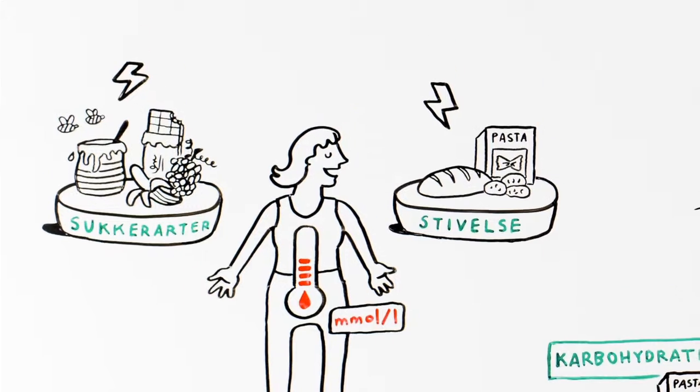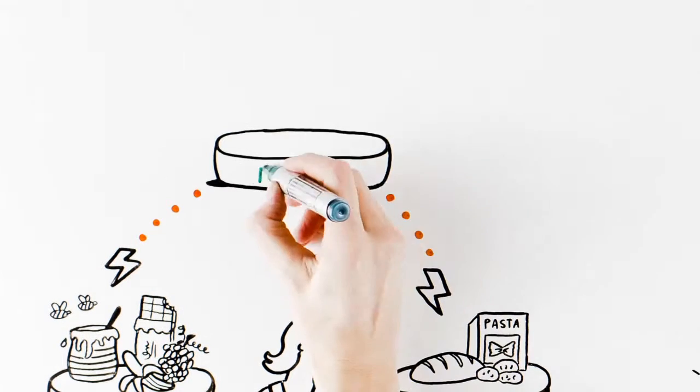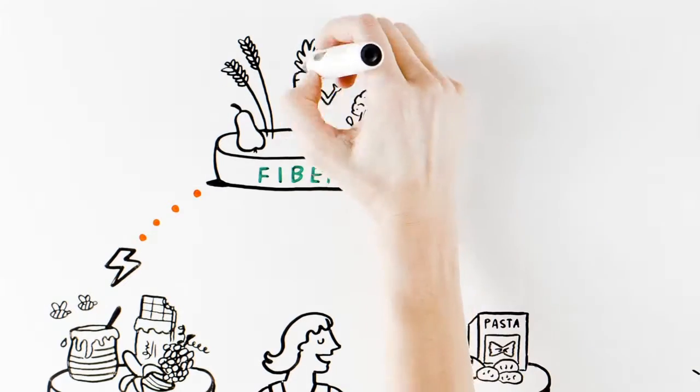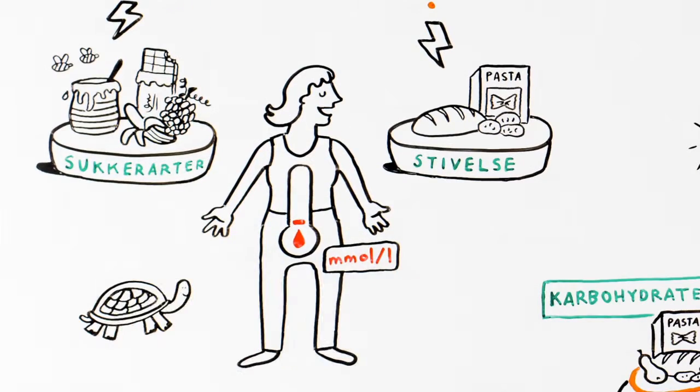But if the food is rich in fiber, such as whole grains and vegetables, the fiber causes the sugar to be absorbed more slowly in the gut. As a result, your blood sugar does not rise so fast.